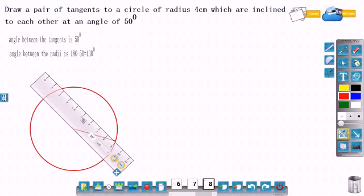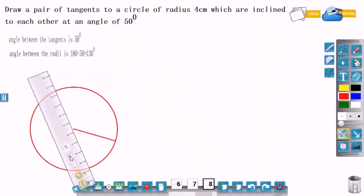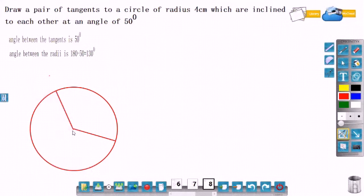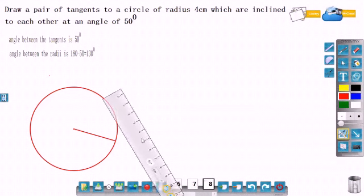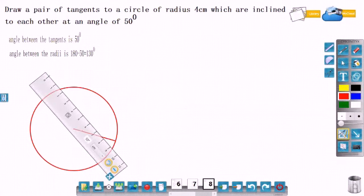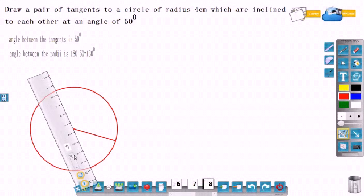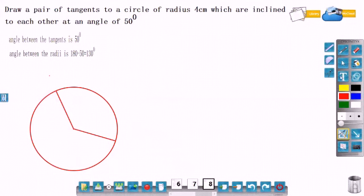Now we have to construct angle 130 degrees at the center. If the angle between the radii is given, we can construct directly. Here, the angle between the tangents is given, so the angle between the radii is 130 degrees. Now this is angle 130 degrees.